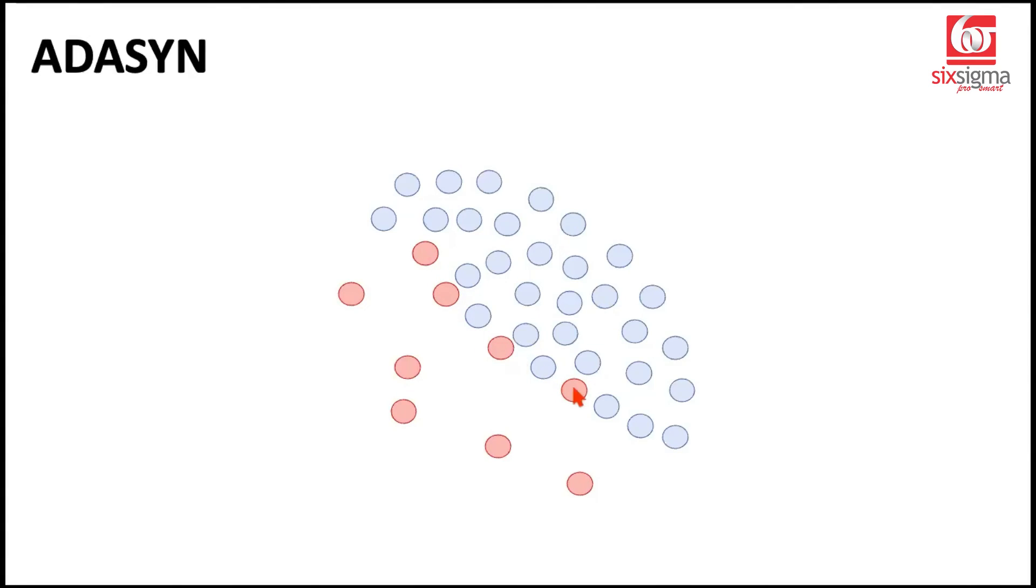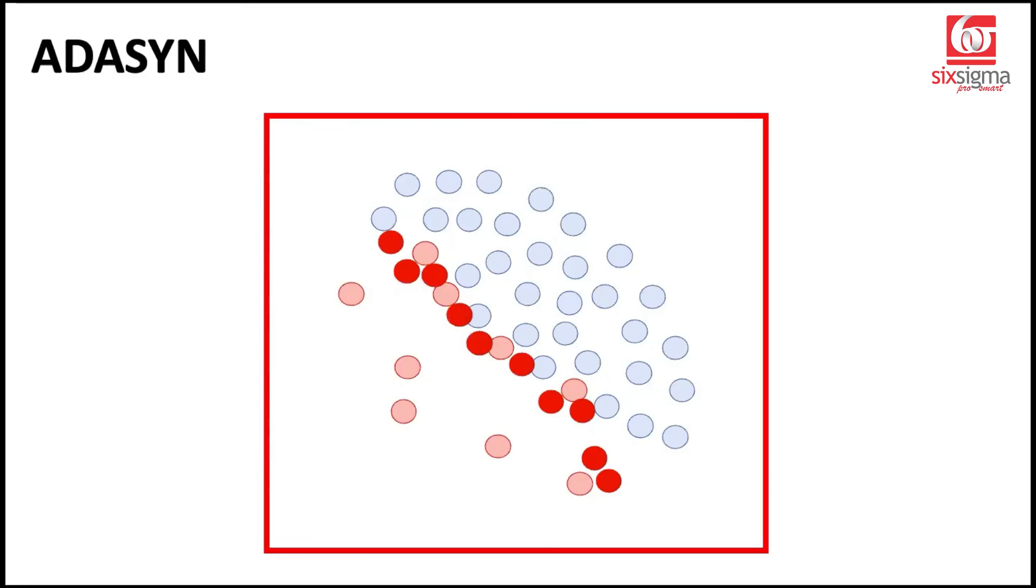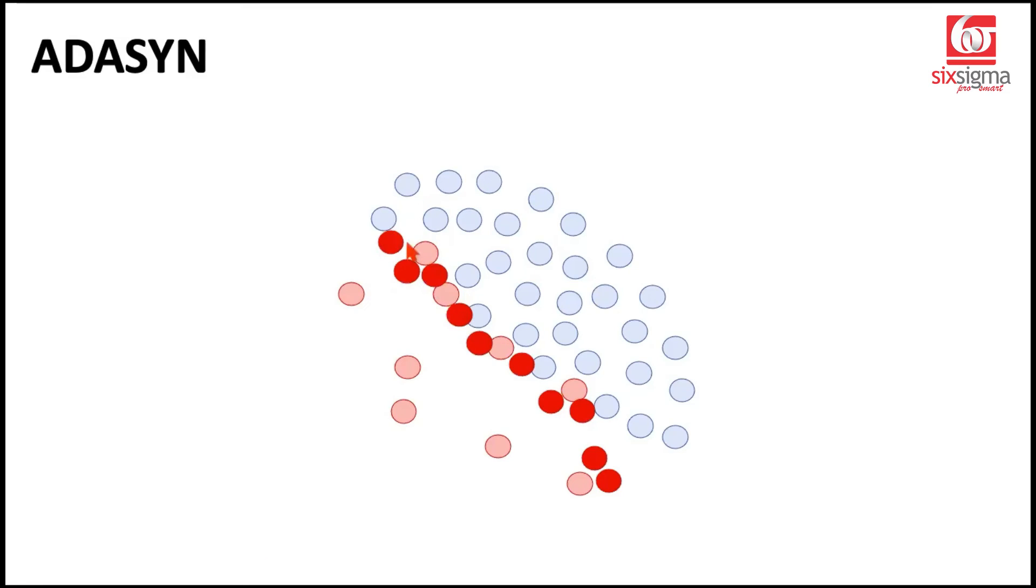So you can imagine it has generated more such observations where the classification was difficult. And these then become a part of the minority class. Not only this, if we do it in an iterative fashion, it would further add more records corresponding to the synthetic records as well. So it will be something like this. So not only the earlier records that we generated became a part of the minority class, using those records, it can further generate more synthetic observations.